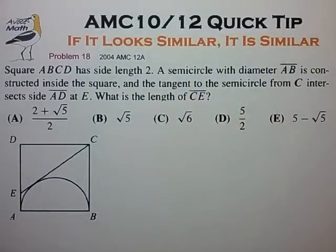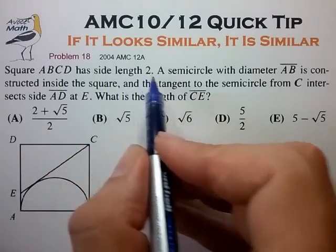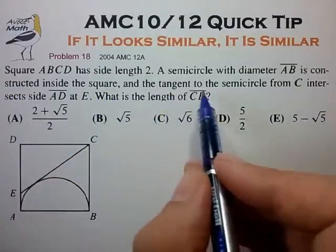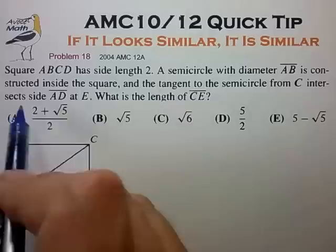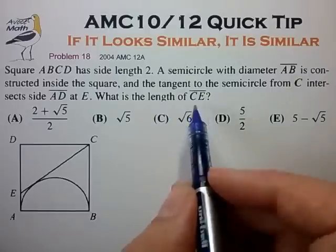Let's see how that works in our example problem. Square ABCD has side length 2, and a semicircle with diameter AB is constructed inside the square. The tangent to the semicircle from C intersects side AD at E. What is the length of segment CE?